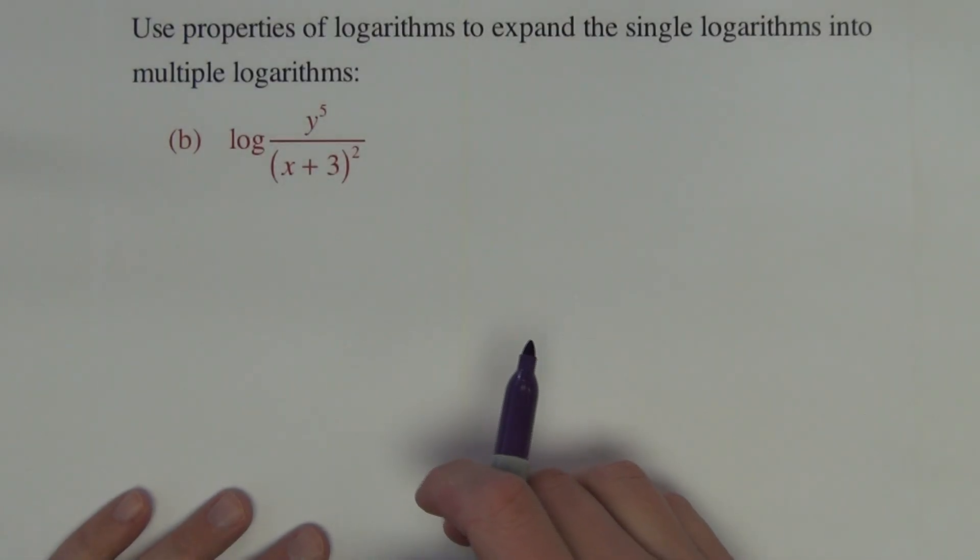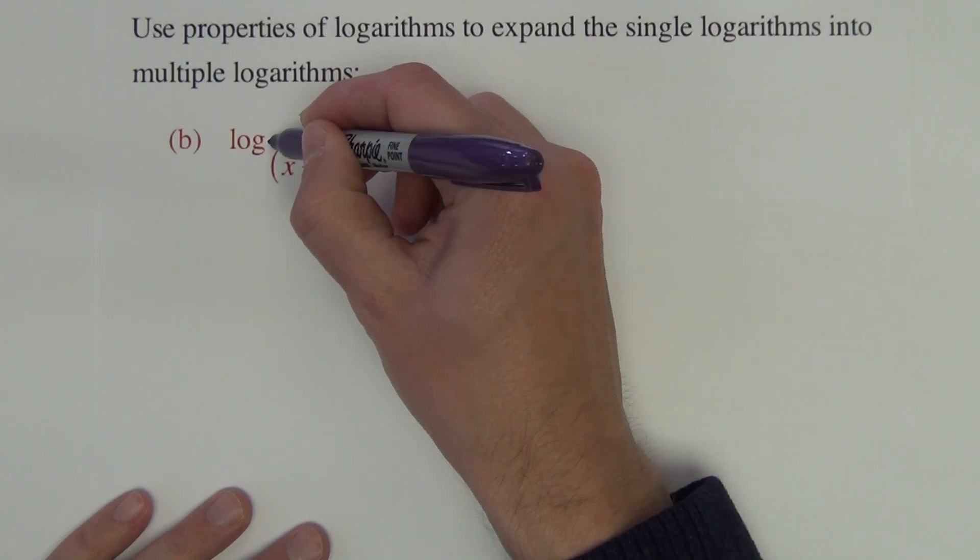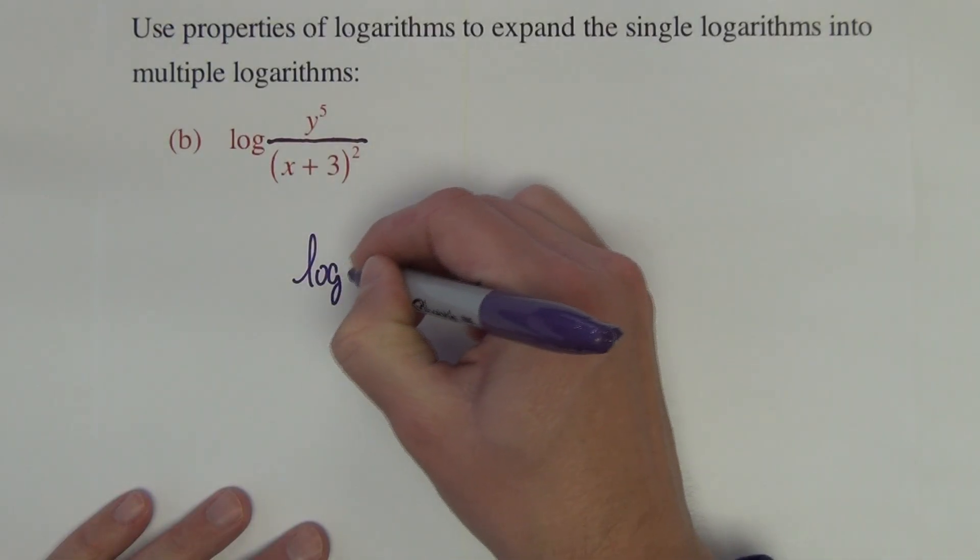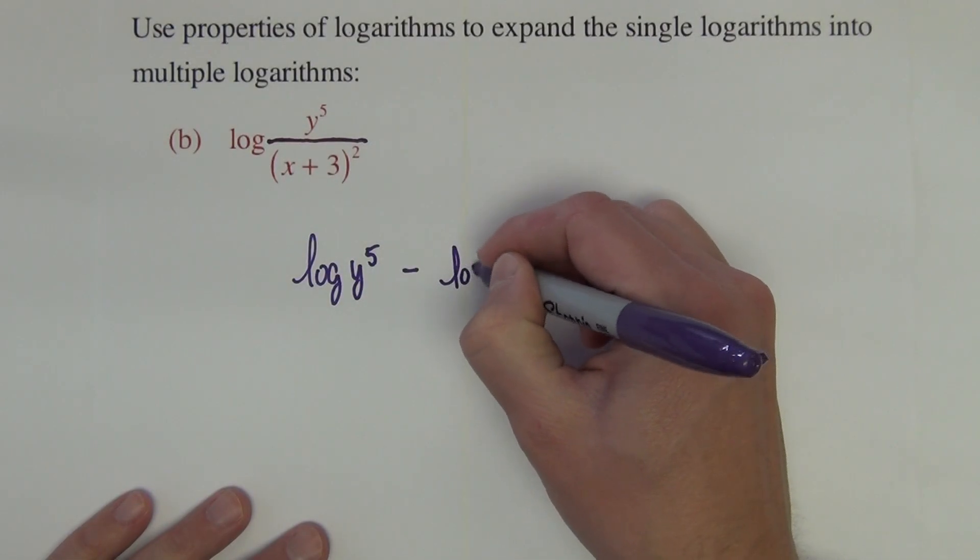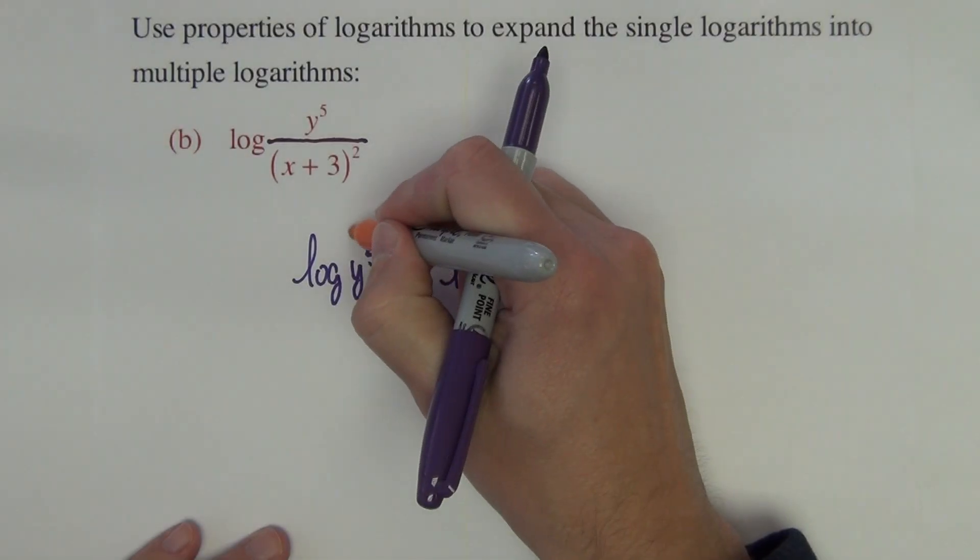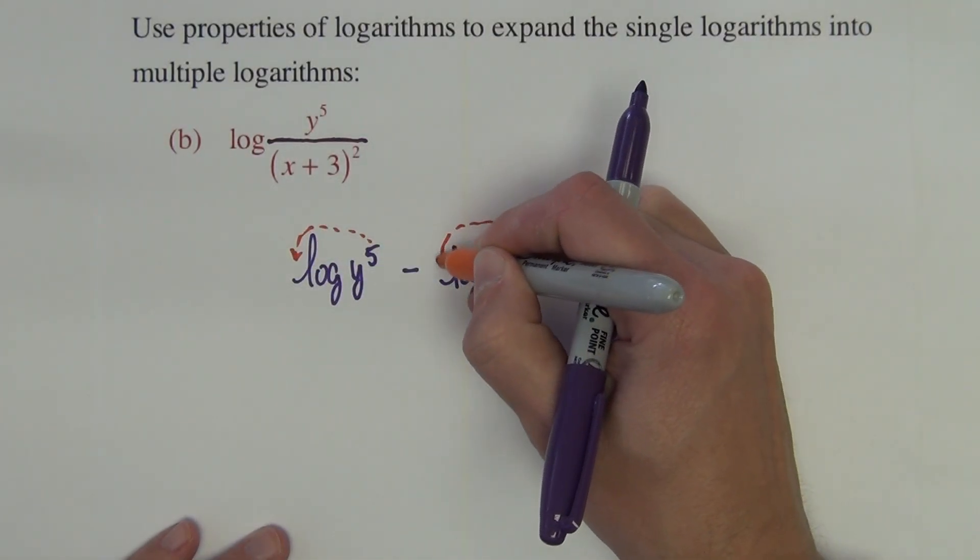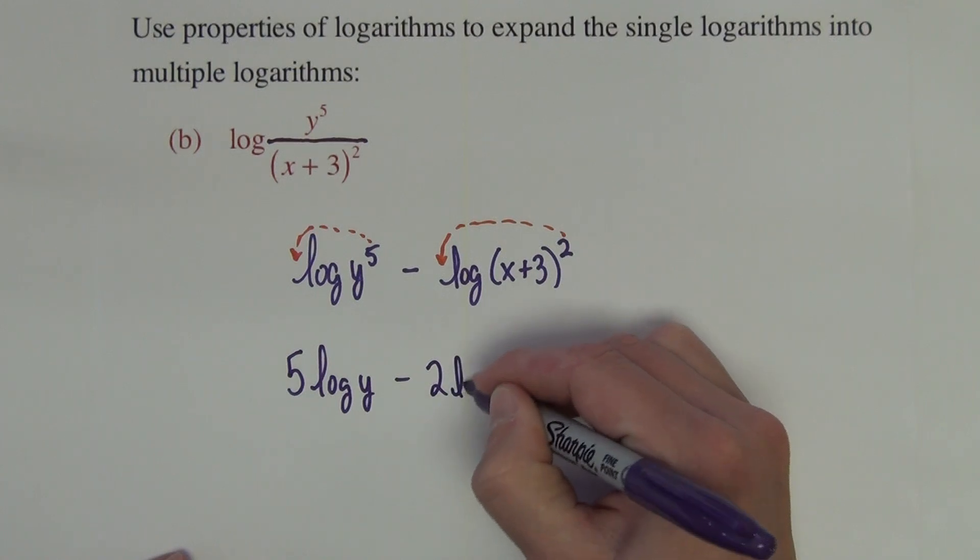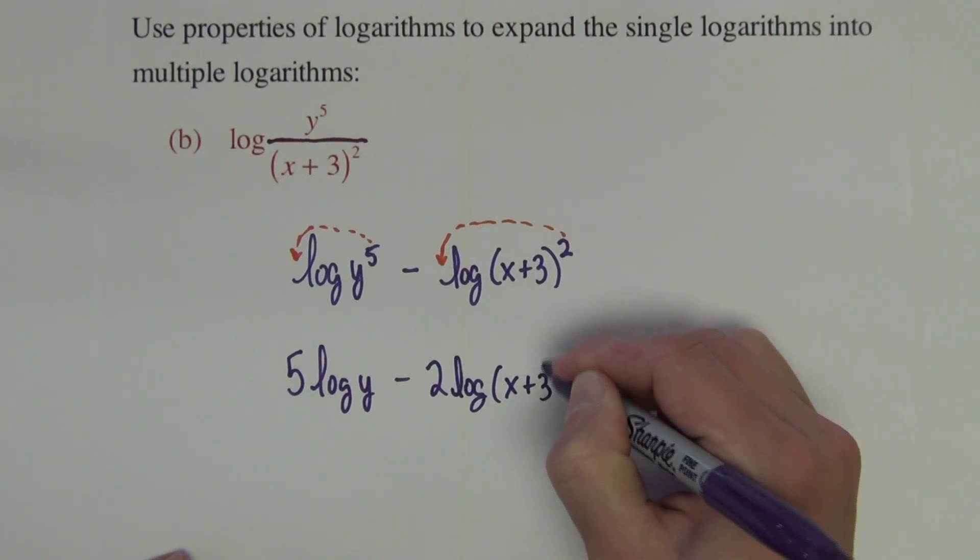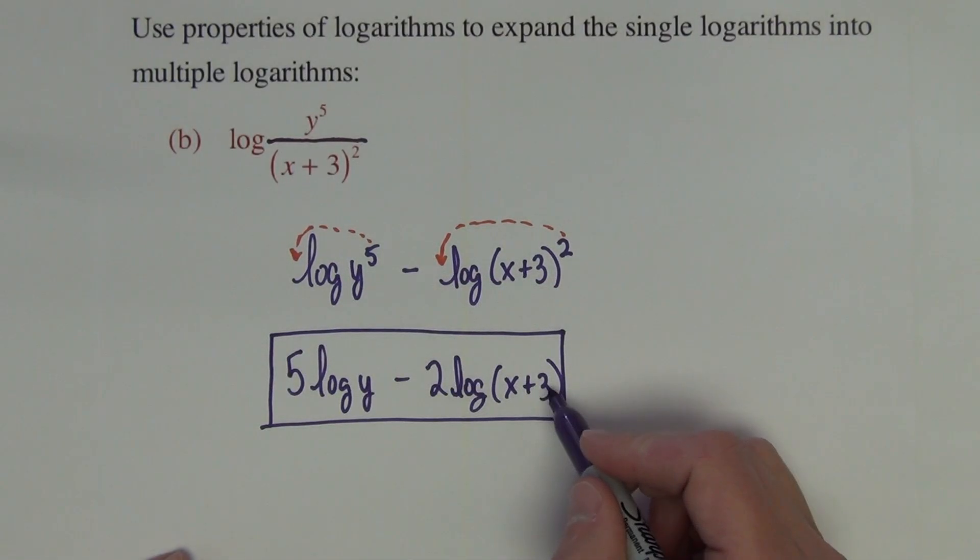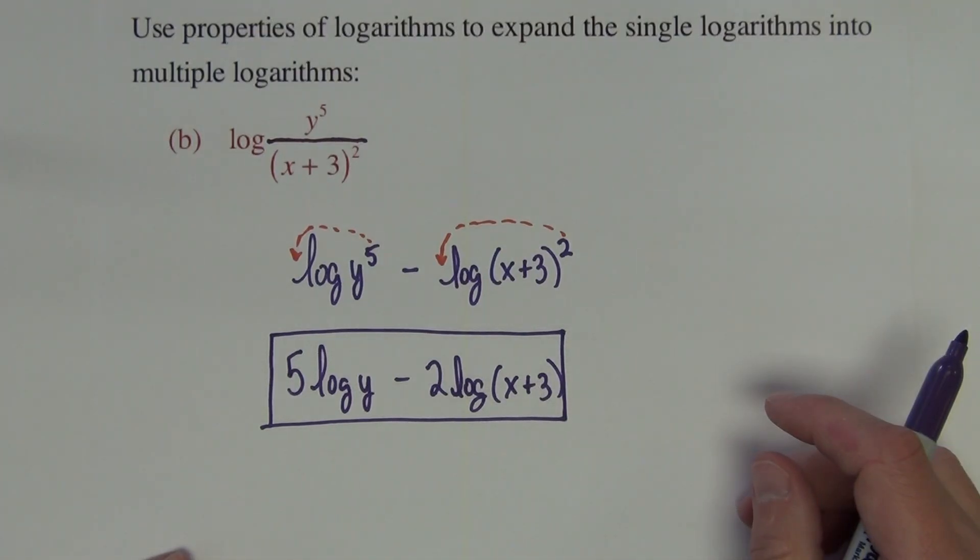Second question has the same directions. We're expanding this log expression into multiple logarithms. Here we see a division, which tells us how to separate this. We're going to have log y to the fifth minus log x plus 3 squared. Again, any exponent moves to the front of its respective logarithm. So we end up with 5 log of y minus 2 log x plus 3. Please do not think that you can split up a log of a sum. This log of x plus 3 cannot be split up into multiple logs itself. Only splitting up products and quotients is all we're able to do.